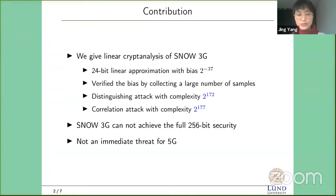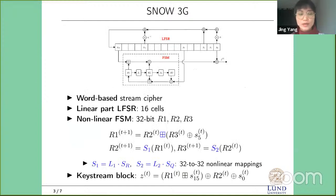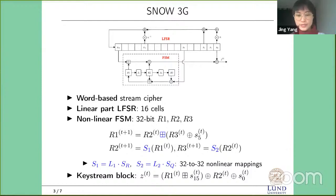These attacks are not an immediate threat for 5G since they require a large number of data. Snow 3G is a word-based stream cipher with a linear part — an LFSR with 16 cells — and a nonlinear finite state machine (FSM). The FSM has three registers R1, R2, R3 with nonlinear mappings S1 and S2 from 32 bits to 32 bits, and the keystream block is 32 bits.